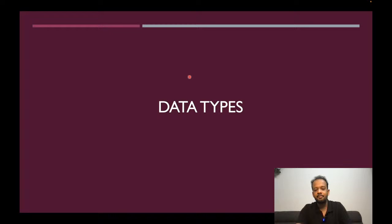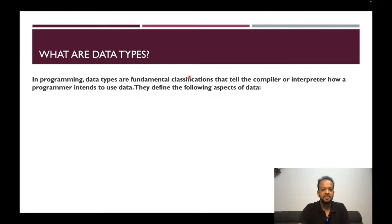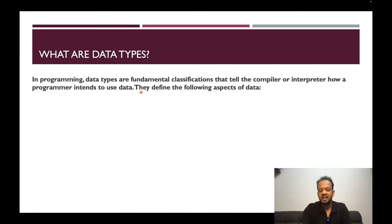Now let's understand what we mean by data types and why they are so important. Each programming language has its own set of data types, but there are commonalities across languages. We will understand specifically: first, what data types are and why they're important, and second, what the different data types in Python are. In programming, data types are fundamental classifications that tell the system — the compiler or interpreter — how a programmer intends to use the data.